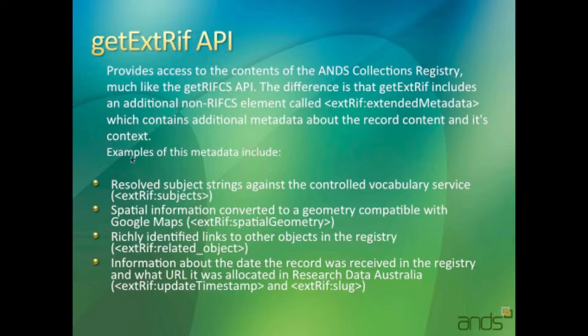The GetXRIF API is another one which pulls information out of the registry. It's very similar to the GetRIFCS API, but it differs in the way that it pulls back extended RIF.